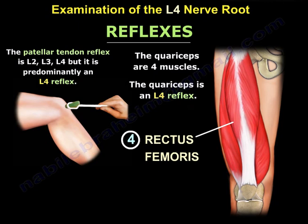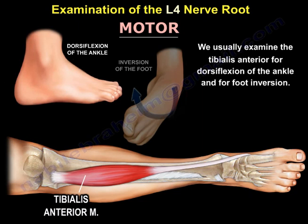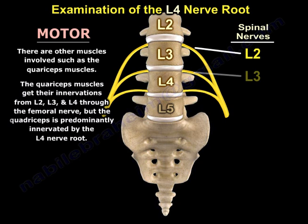For the motor examination, we usually examine the tibialis anterior for dorsiflexion of the ankle and for foot inversion. There are other muscles involved, such as the quadriceps, which gets innervation from L2, L3, L4 through the femoral nerve, but it is predominantly an L4 nerve root.